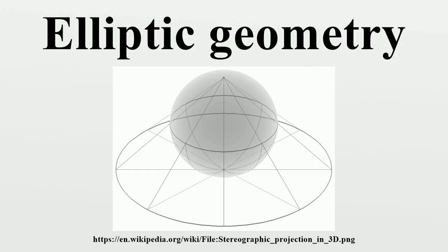A central conic is called an ellipse or a hyperbola according as it has no asymptote or two asymptotes. Analogously, a non-Euclidean plane is said to be elliptic or hyperbolic according as each of its lines contains no point at infinity or two points at infinity.